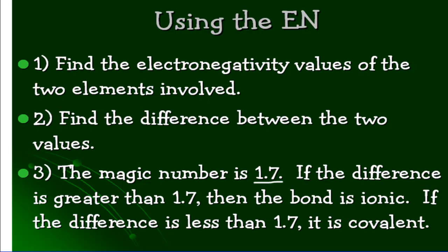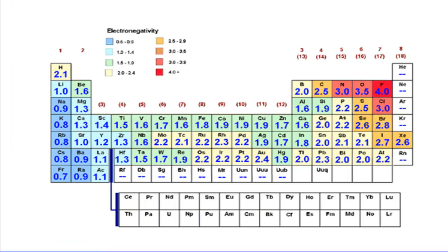Let's look at some examples. Here's a periodic table that has the electronegativities on there.